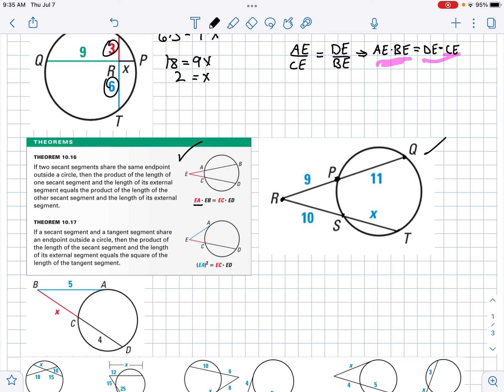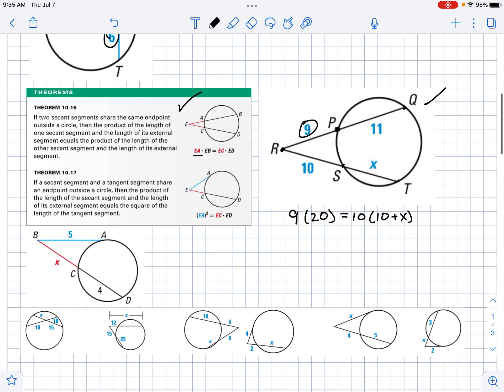Now here is what this theorem tells us. We're going to take 9 times the whole length here, 9 plus 11, that's going to be 20, and that equals 10 times 10 plus X. And that's how we can find X. We've got 9 times 20, let me divide out this 10, so I've got 9 times 2. Then I've got 18 equals 10 plus X, and that means that X is equal to 8.